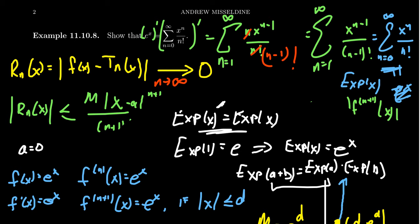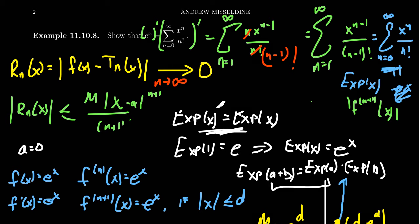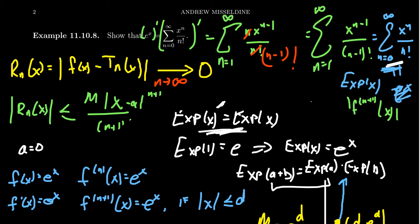The fact that the natural exponential is equal to its own derivative is fundamental for differential equations — for example, the integrating factor for linear differential equations is based on this observation. We could have introduced this transcendental function through power series from the start. This opens up the idea that we can use Taylor series to tailor-make solutions to other differential equations — there is a lot of power to power series.